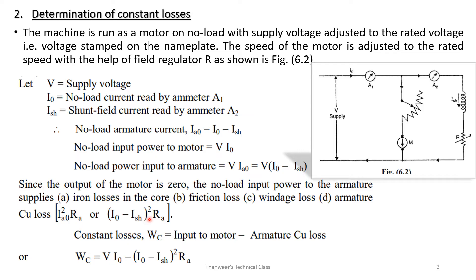The armature copper loss is equal to I_A0² × R_A, where I_A0 = I₀ − I_SH. Therefore, the constant loss W_C equals the input to the motor minus the armature copper loss. That is, W_C = V × I₀ − (I₀ − I_SH)² × R_A.